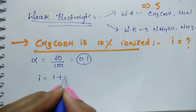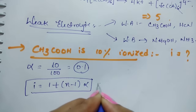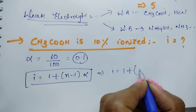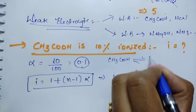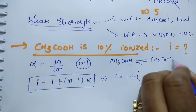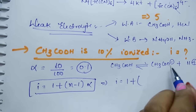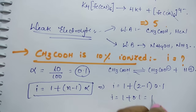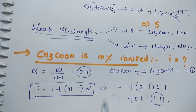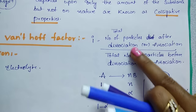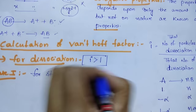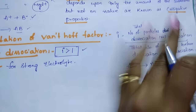Using the formula for dissociation: I = 1 + (N − 1)×alpha. For acetic acid CH₃COOH, it dissociates into 2 ions, so N = 2. Substituting: I = 1 + (2 − 1)×0.1 = 1 + 0.1 = 1.1. Initially 1 mole is there, but after dissociation we get I = 1.1, because the number of particles after dissociation is more. That is why for dissociation, I is always greater than 1.